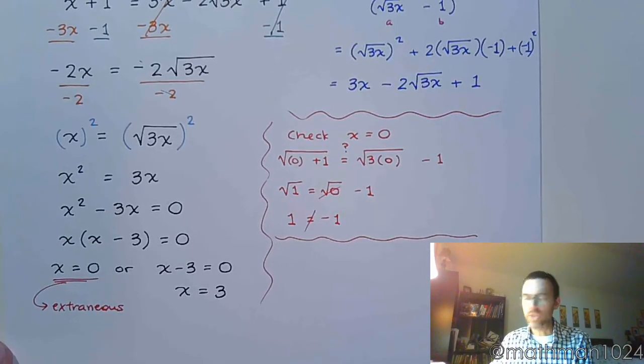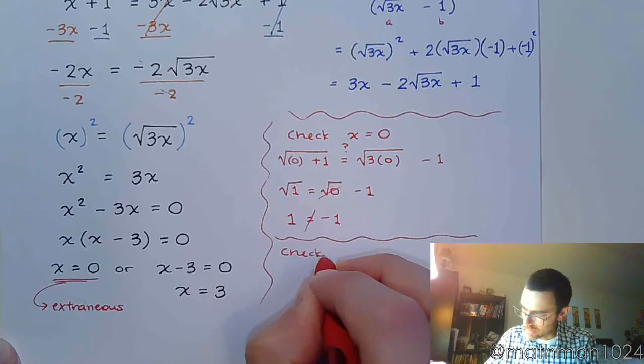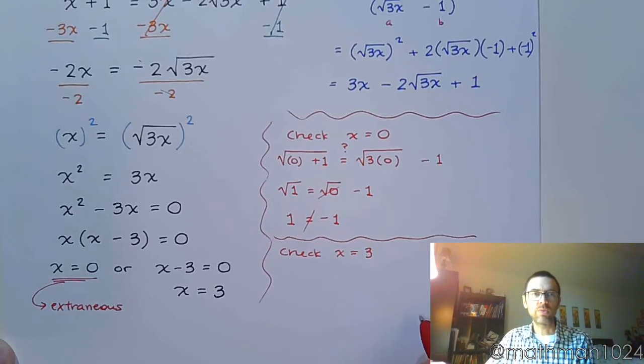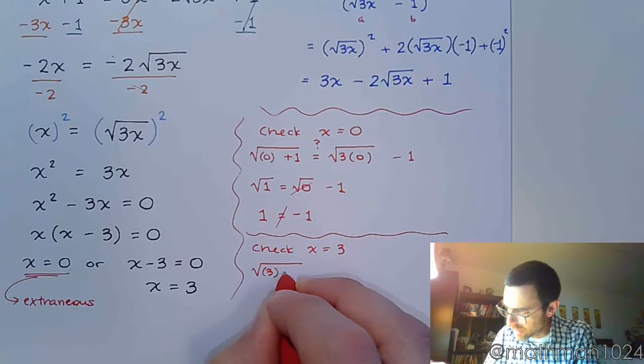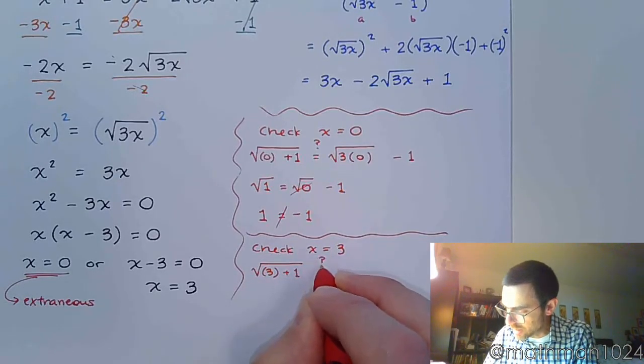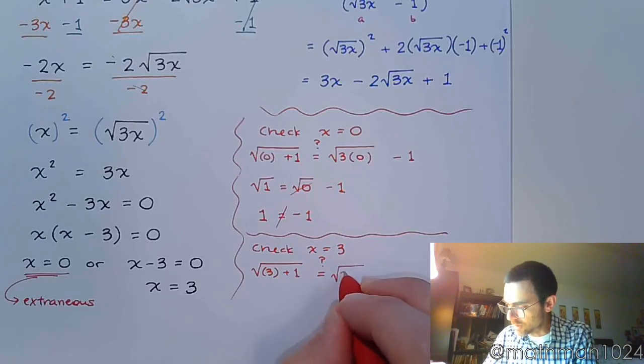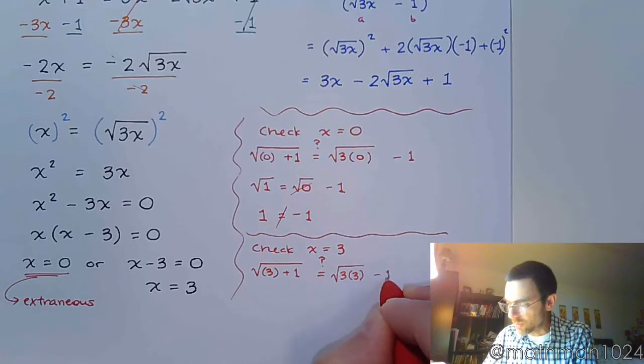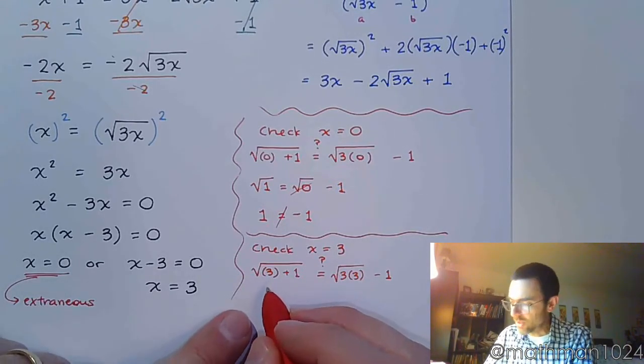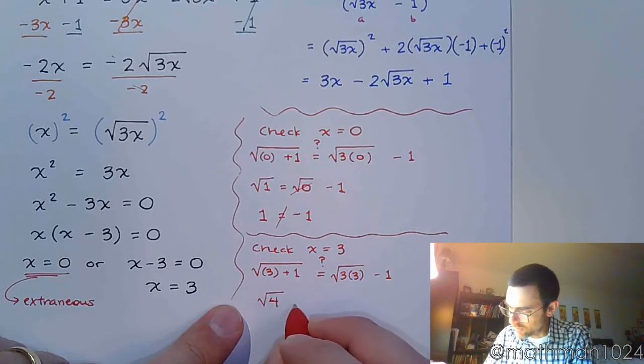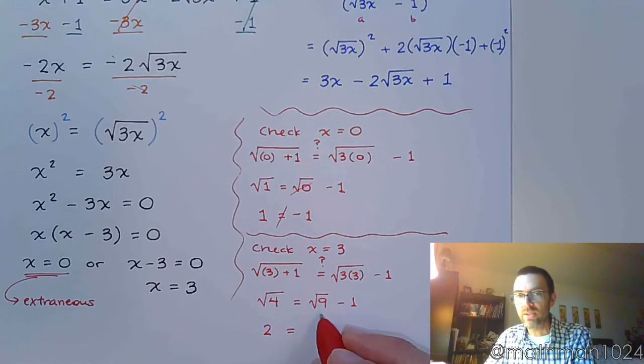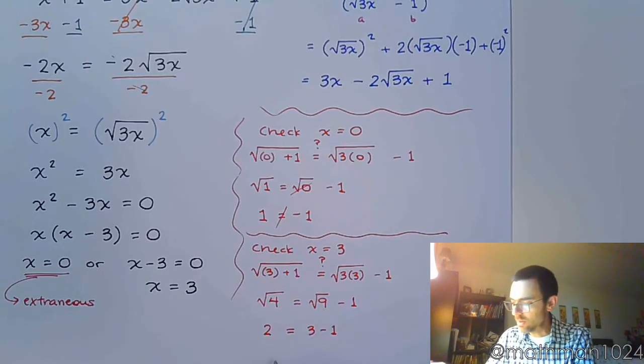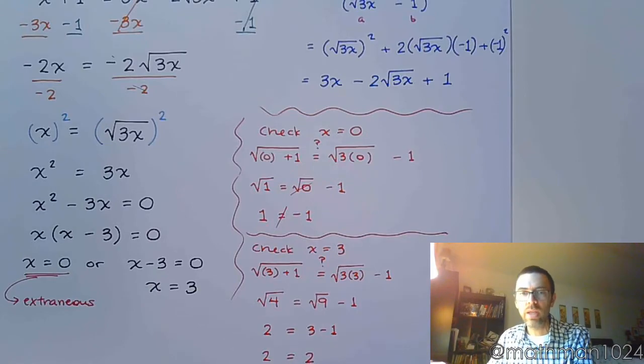All right, we have one more solution to check and that's x equals 3. So let's check x equals 3 and see what we got there. So looking back up at the original equation we have the square root of 3 plus 1, I want to know does that equal the square root of 3 times 3 minus 1. All right, let's see, this gives me the square root of 4, this is the square root of 9 minus 1. The square root of 4 is 2, the square root of 9 is 3 minus 1 and oh look at this, 2 equals 2. So that guy checks out.